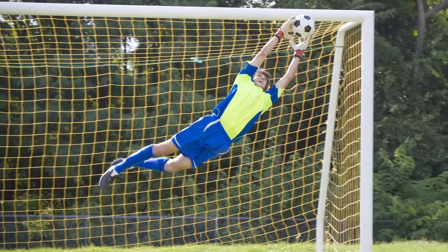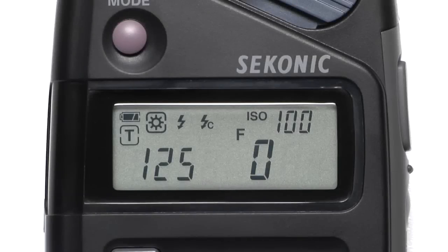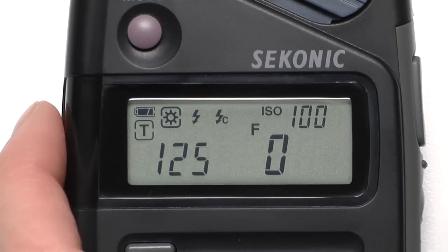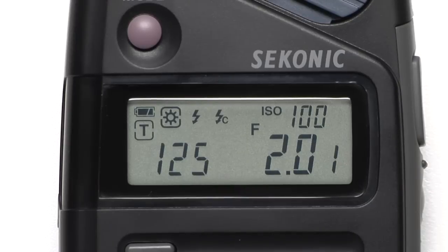In order to freeze action or create motion blur, photographers often use shutter priority mode. Let's do an example shutter priority reading. Make sure that both the sun icon and the T are both selected — you are now in shutter priority mode. Click the measure button. The meter now displays the correct aperture.